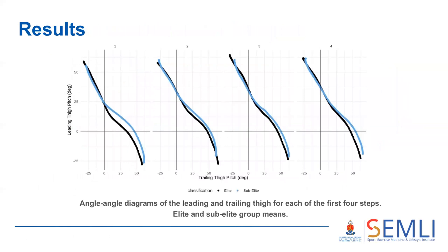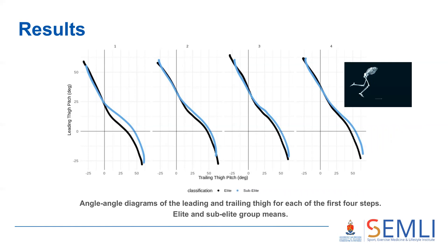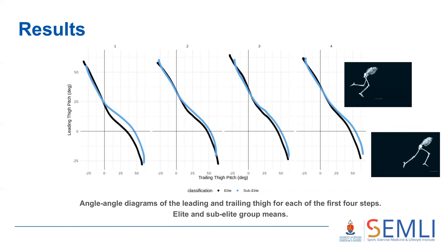Looking at the angle-angle plots for each of the first four steps, with the elite group shown in black and the sub-elite group in blue: the majority of the profile is a linear antiphase pattern where the leading limb is extending and the trailing limb is flexing. In the mid portion, during the stance phase, there is a more horizontal region. Around the time of toe-off, at the start and end of the step, there is a small vertical section. These two deviations from the antiphase pattern appear to be more prominent in the sub-elite group.